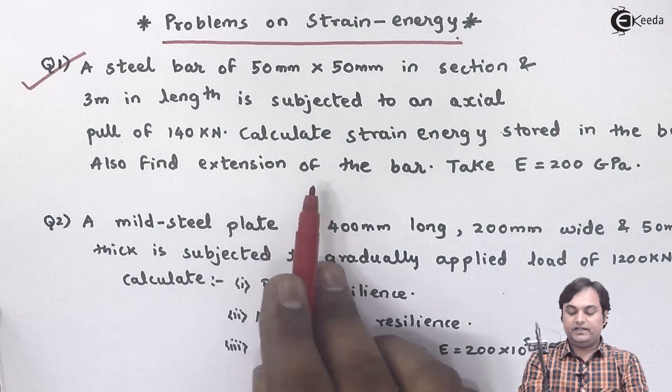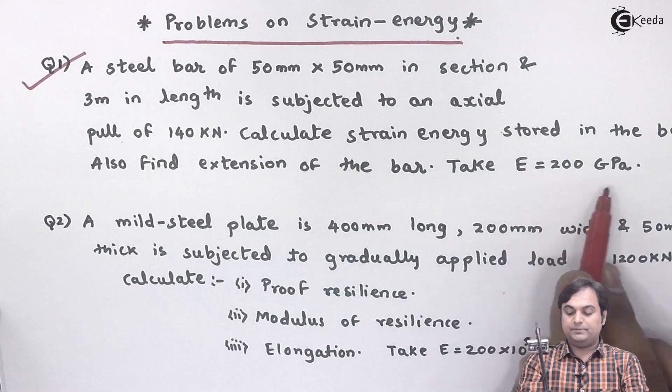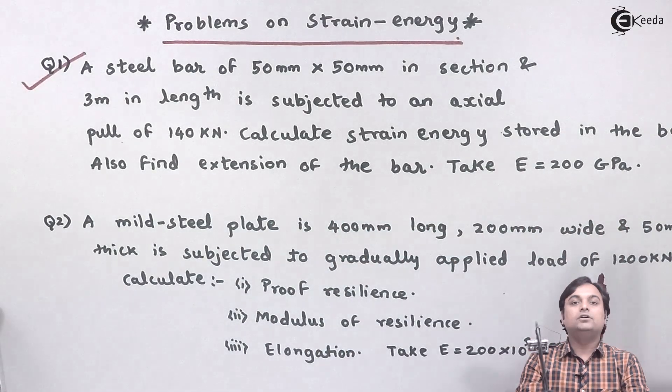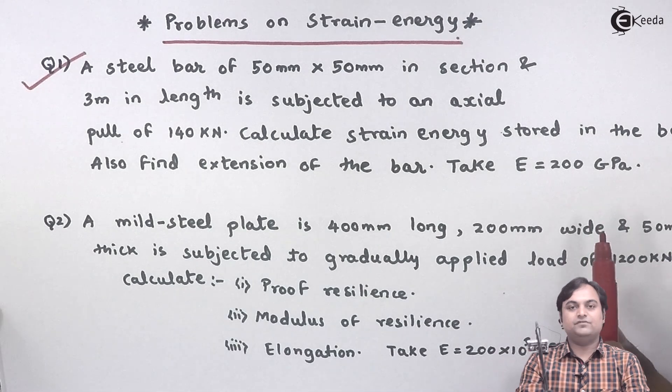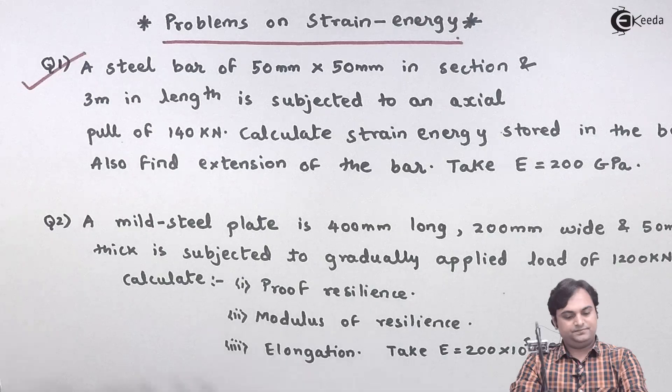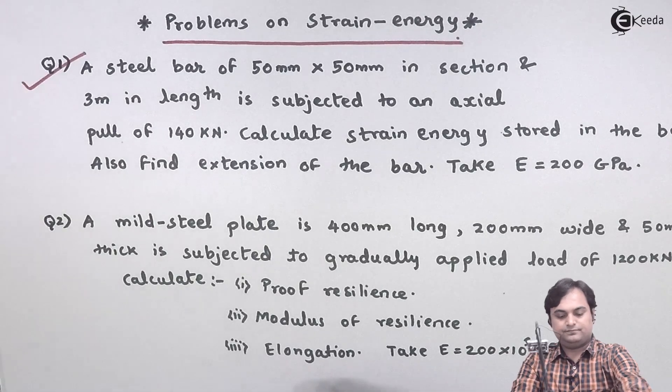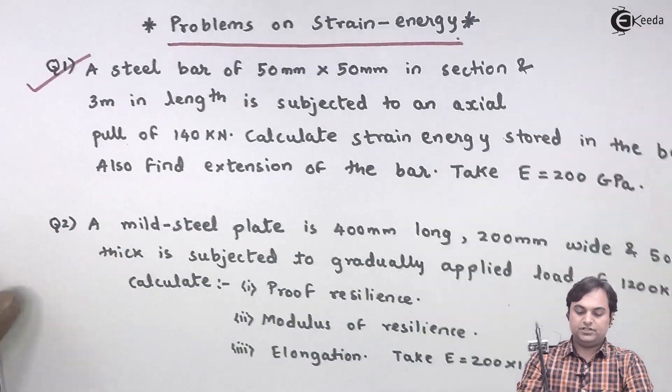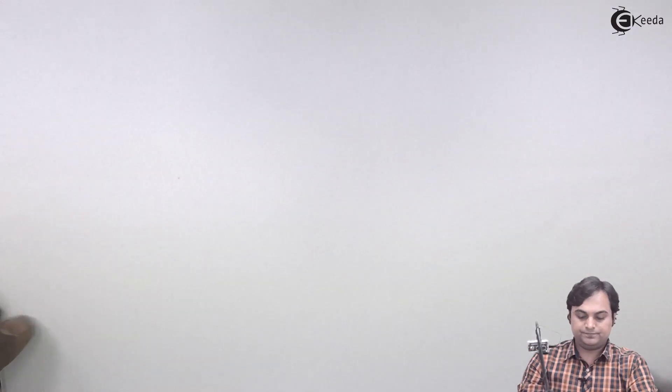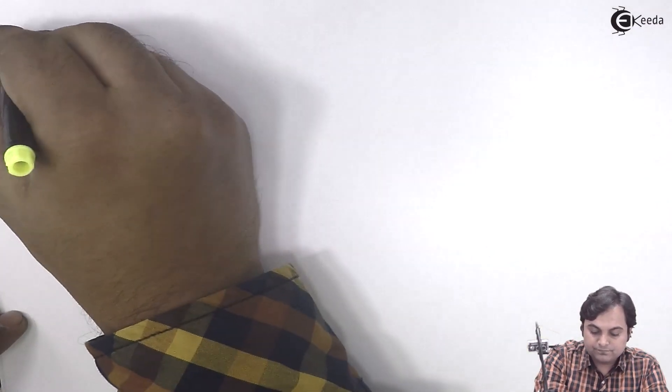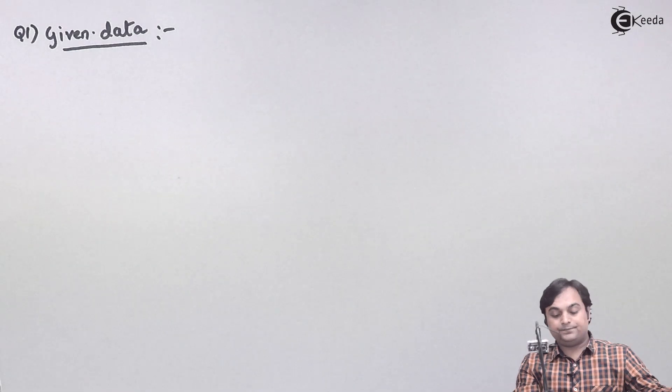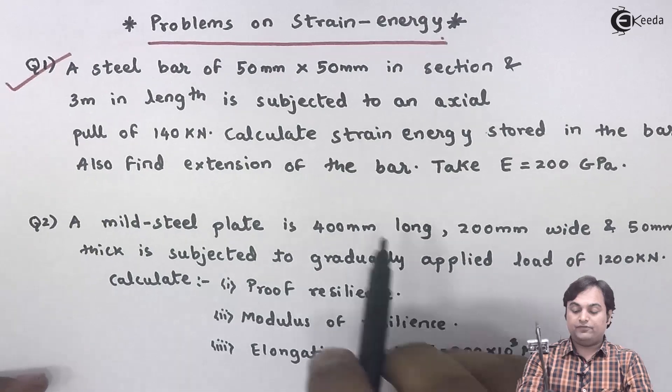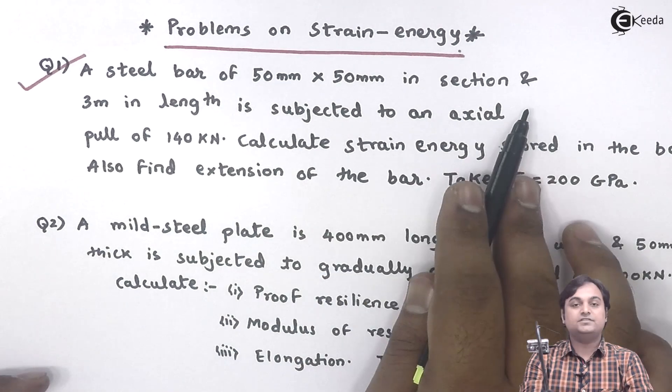Also find extension of the bar. Take capital E as 200 GPa. This is the question which we have in front of us. Based on the question which is given, we will write the data. We are in question number one on strain energy. Here it is given that a steel bar of 50 mm into 50 mm in section.